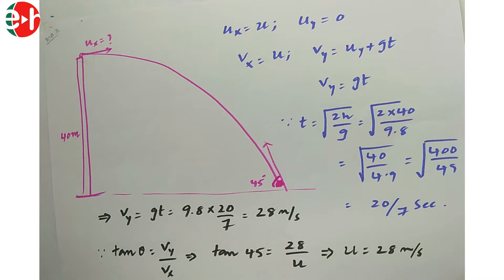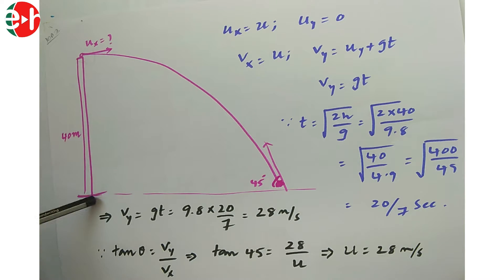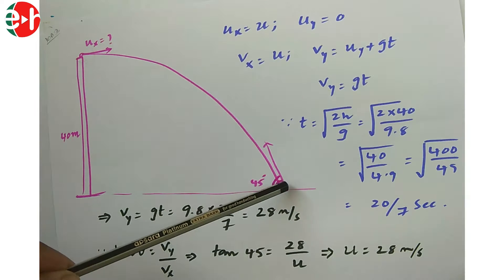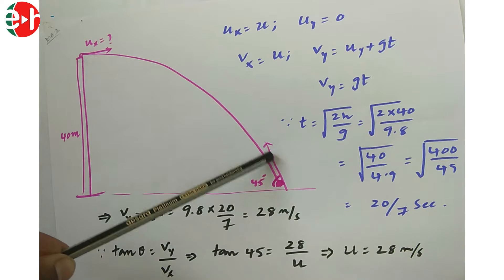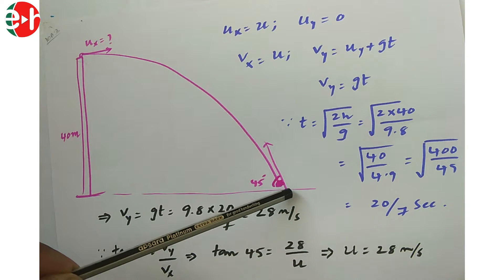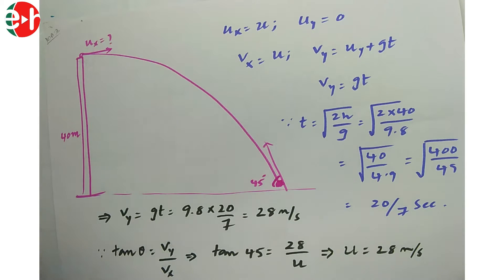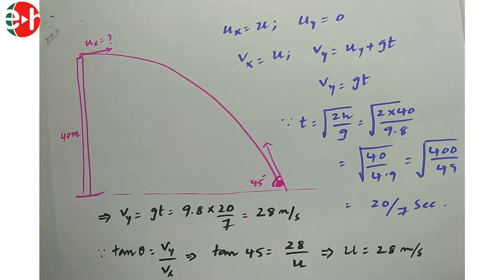An object is thrown horizontally from a height of 40 meters and hits the ground making an angle of 45 degrees with the horizontal. The question asks for the velocity of projection — that is, what is Ux?